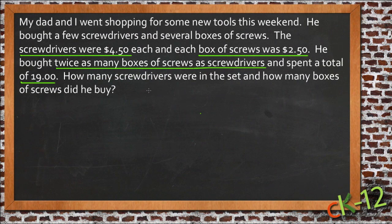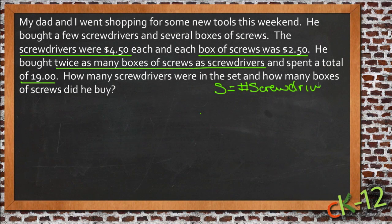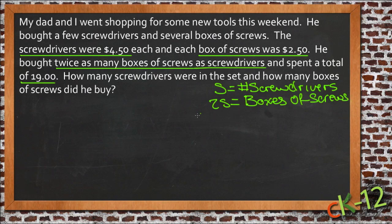We know there are some number of screwdrivers and some number of boxes of screws. We don't know how many of either yet, but we do know there are twice as many boxes of screws as screwdrivers. So if we let s be the number of screwdrivers, then 2s would be the number of boxes of screws, since there are twice as many of those.